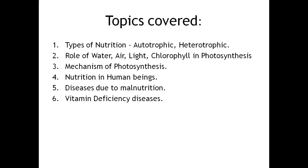In this chapter the following topics are covered: types of nutrition, that is autotrophic and heterotrophic; role of water, air, light, and chlorophyll in photosynthesis; followed by its mechanism; nutrition in human beings; and diseases due to malnutrition and vitamin deficiency. Today we are dealing with the first two topics — types of nutrition and role of the elements in photosynthesis.